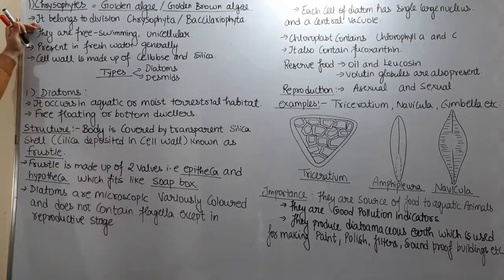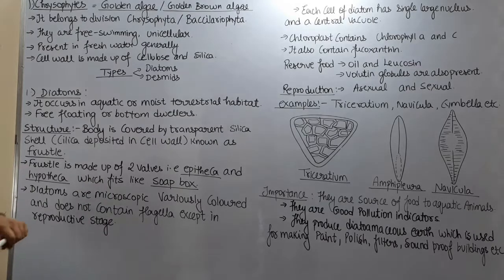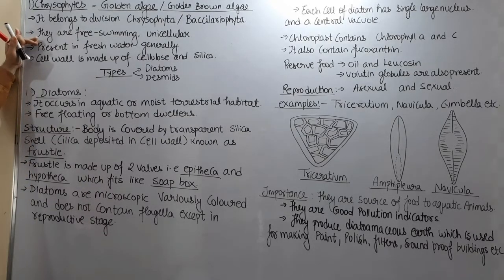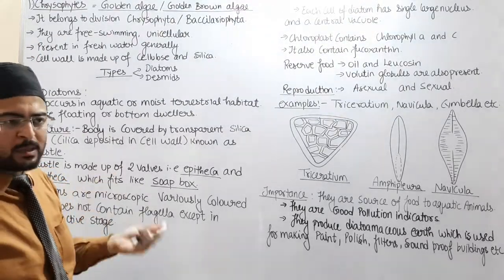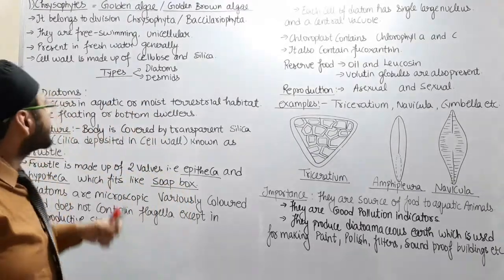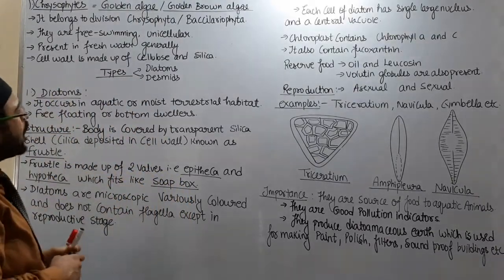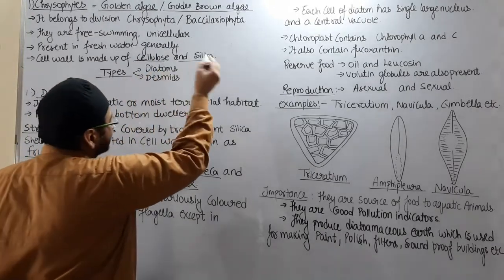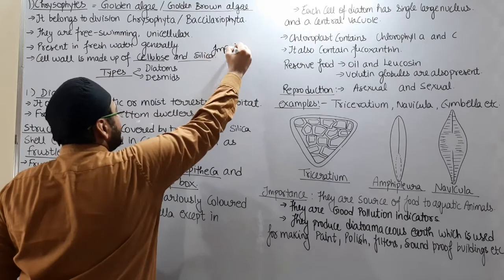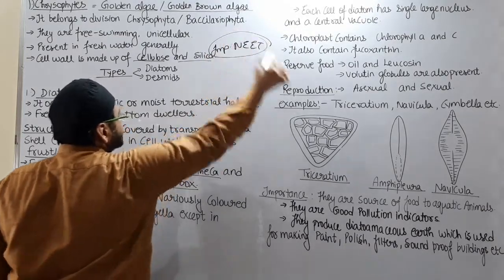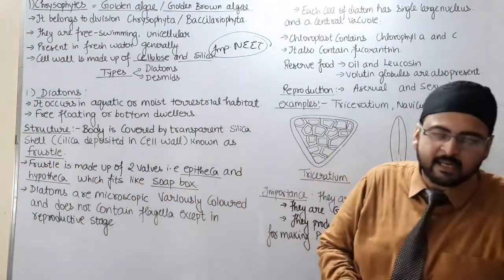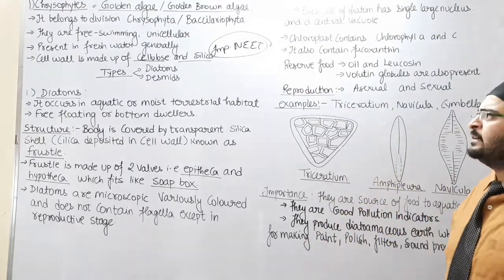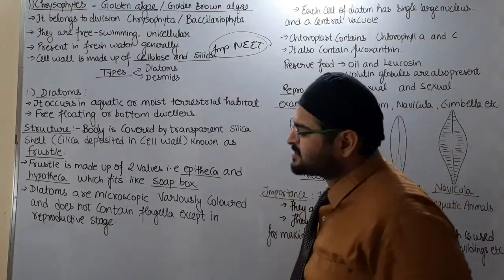It belongs to Division Chrysophyta, which is also known as Bacillariophyta. They are Free Swimming, Unicellular, and found generally in Fresh Water, but they are also found in Aquatic Water. Their Cell Wall is made up of Cellulose and Silica. This point is very important for your NEET examination — the Cell Wall of Chrysophytes is made from Cellulose and Silica.